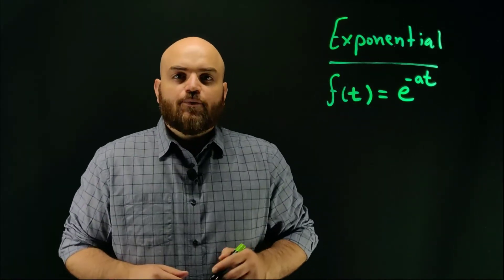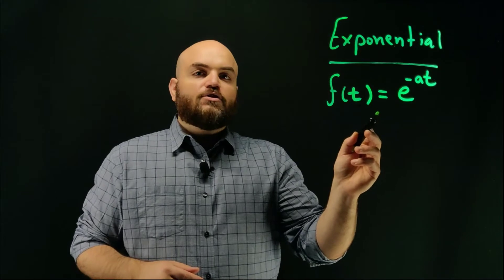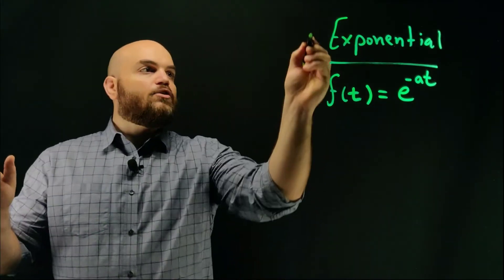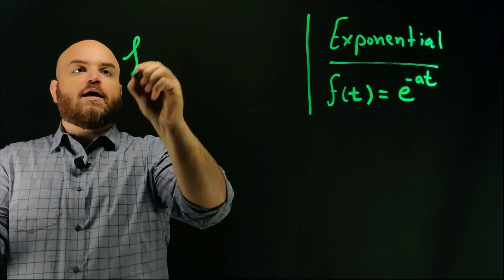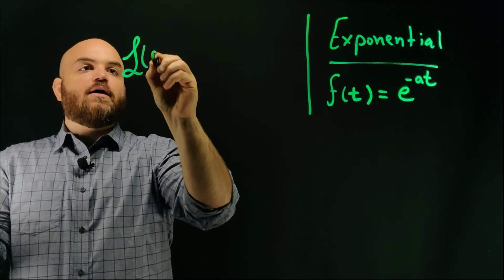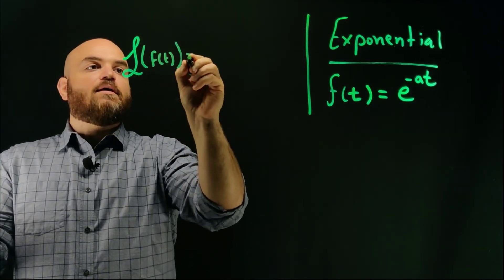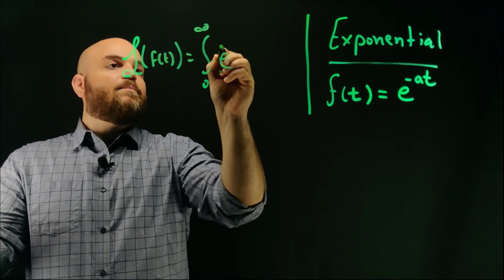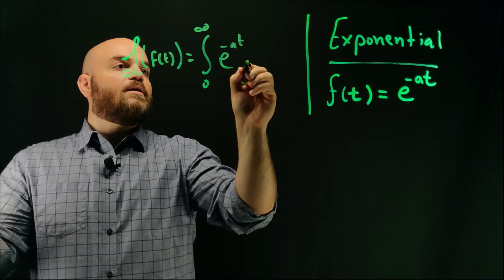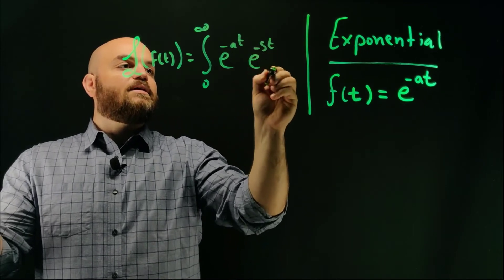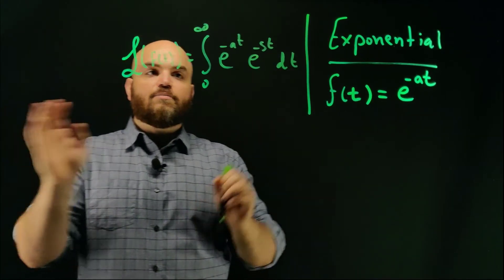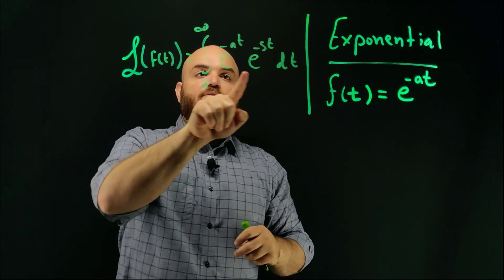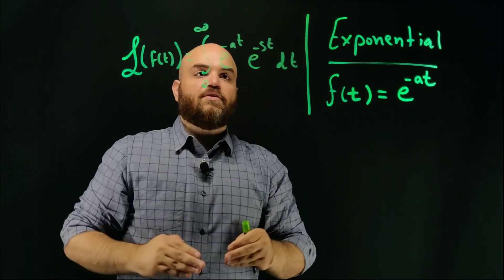So in this next and final example, we're going to take a look at an exponential function. So f of t is e to the minus at. And so we know the Laplace of f of t is the integral from zero to infinity, e minus at times e minus st dt. I'm directly just plugging in this value right here for f of t. And this is my function. This is from the definition of Laplace.